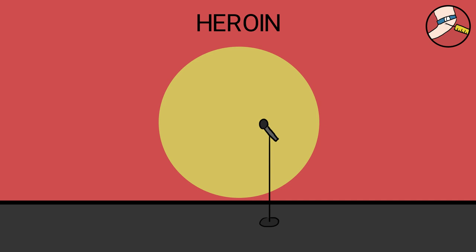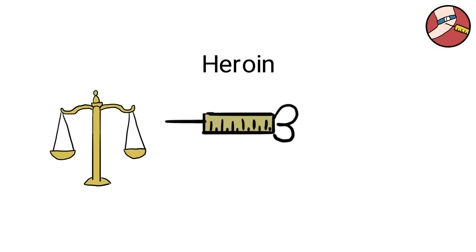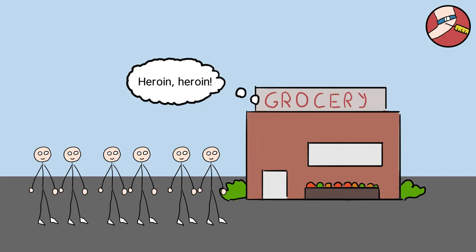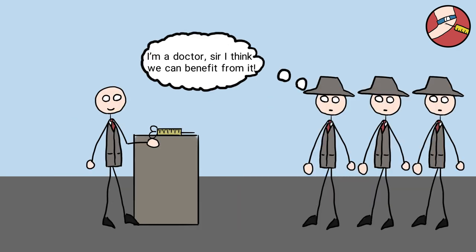Heroin. Heroin is not just the name of a song by the Velvet Underground. This illegal street drug has unquestionably destroyed many lives. However, at one point, you could actually go to your local store and buy it, along with other things on your grocery list. When heroin was released onto the market, it was actually celebrated by doctors as a form of cough suppressant.